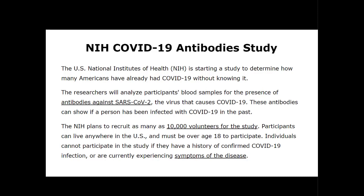These antibodies will show up in anybody that's ever been infected with COVID-19 in the past — if someone had COVID, they will for the rest of their life have antibodies in their bodies. The NIH plans to recruit about 10,000 volunteers. Participants can live anywhere in the United States, must be over age 18, must be able to consent themselves, and cannot participate if they've had a confirmed case of COVID or are currently experiencing symptoms. They're looking for people who have never had COVID — that's the population they want to test to find out how many were exposed and never knew it.